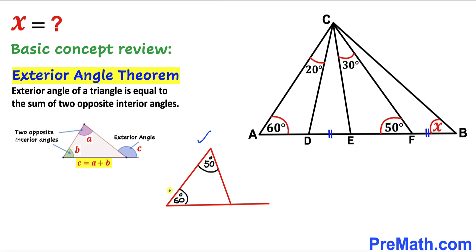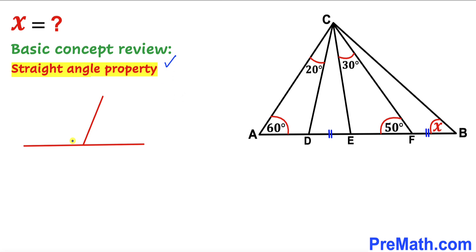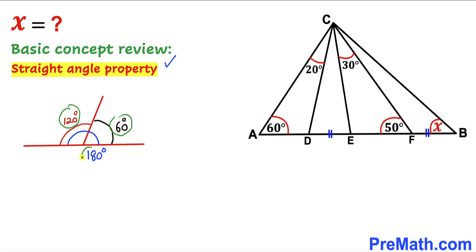For example, if the two opposite interior angles are 60 degrees and 50 degrees, then the exterior angle is their sum: 50 plus 60 equals 110 degrees. Next, the straight angle property: angles on a straight line sum to 180 degrees, so if one angle is 120 degrees, the remaining angle is 60 degrees.